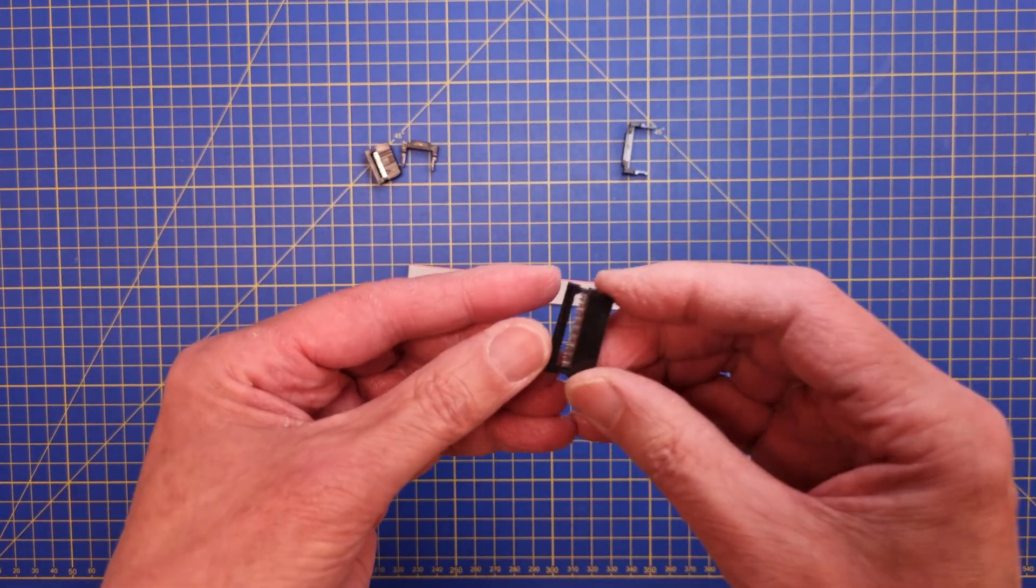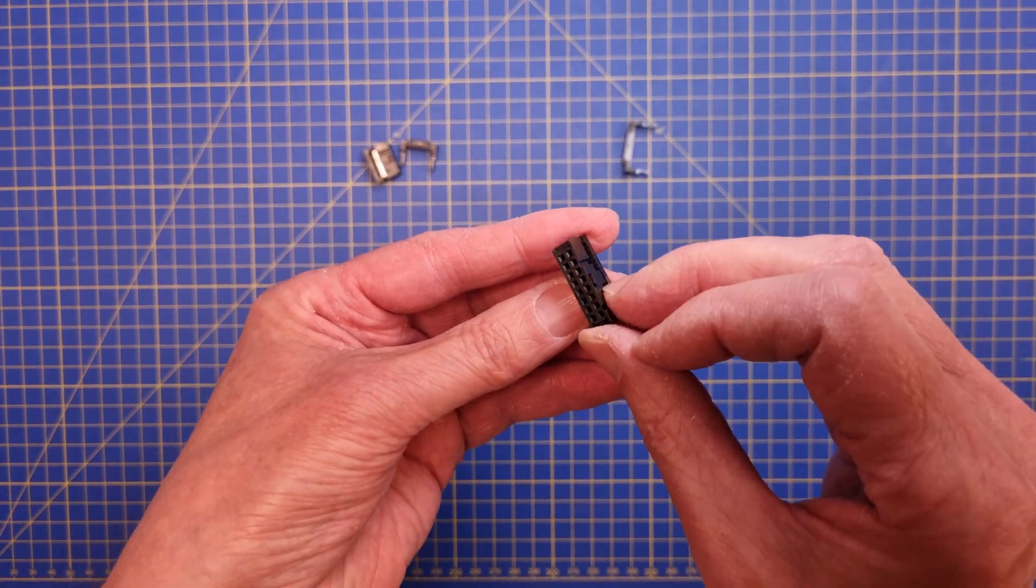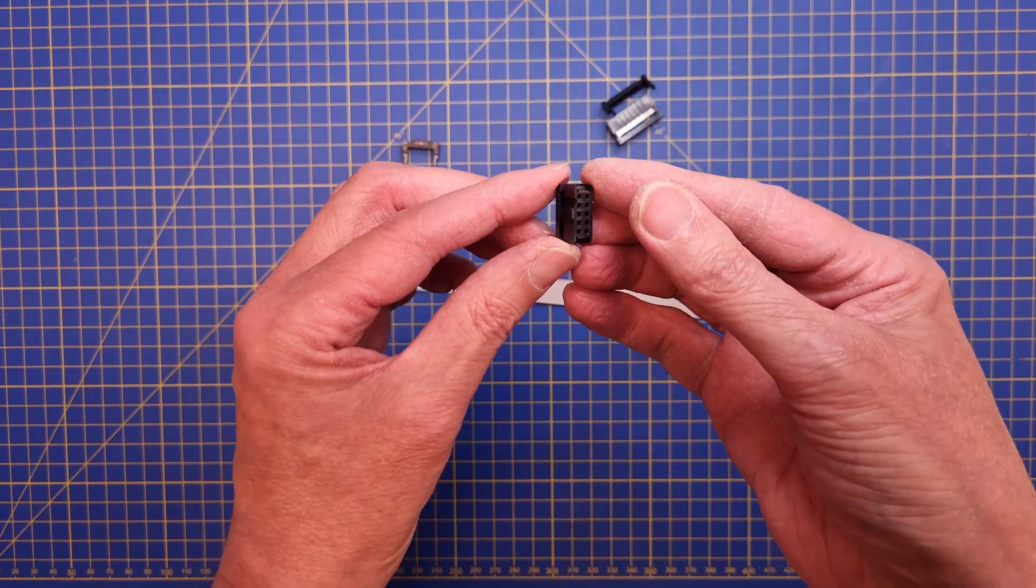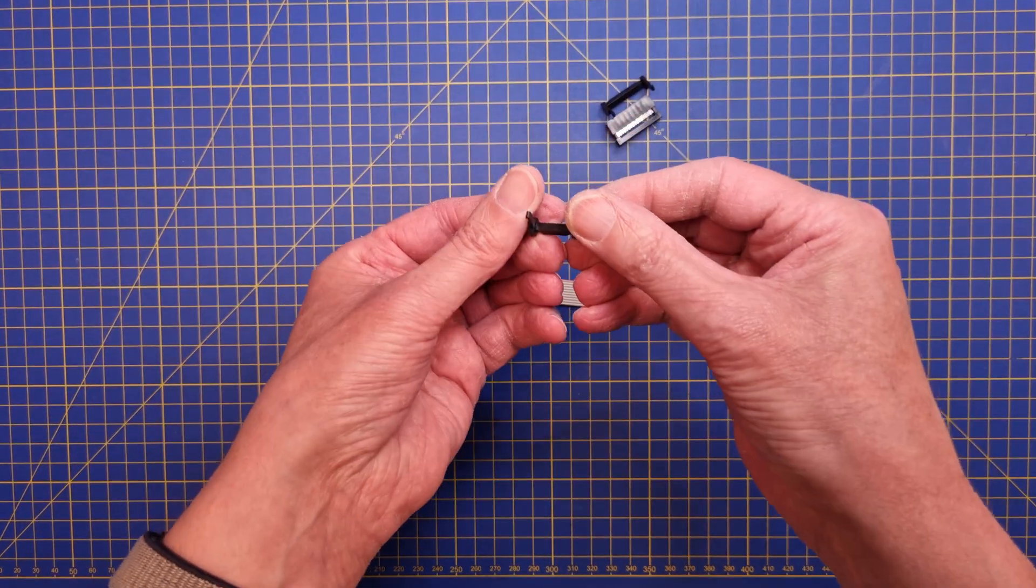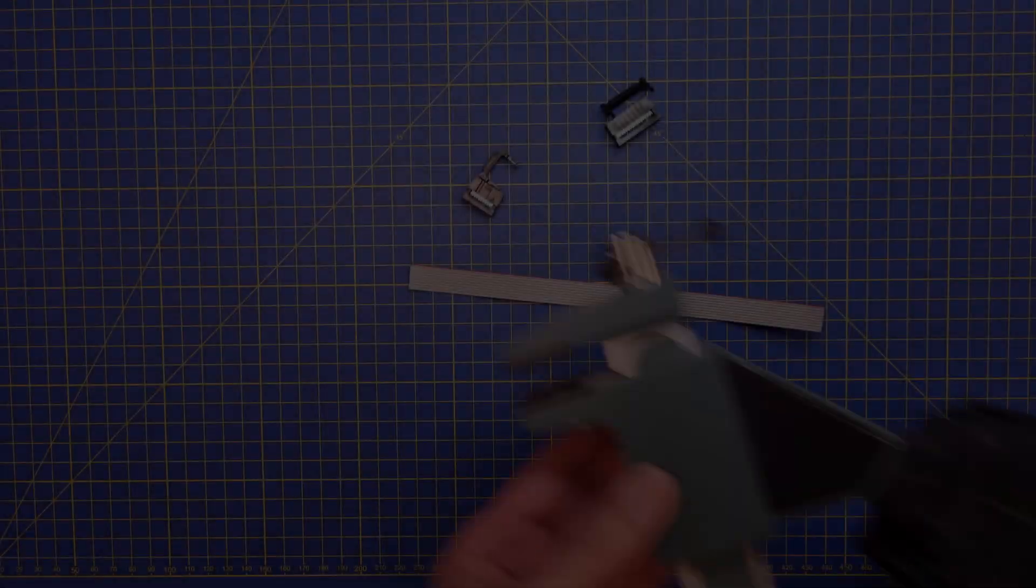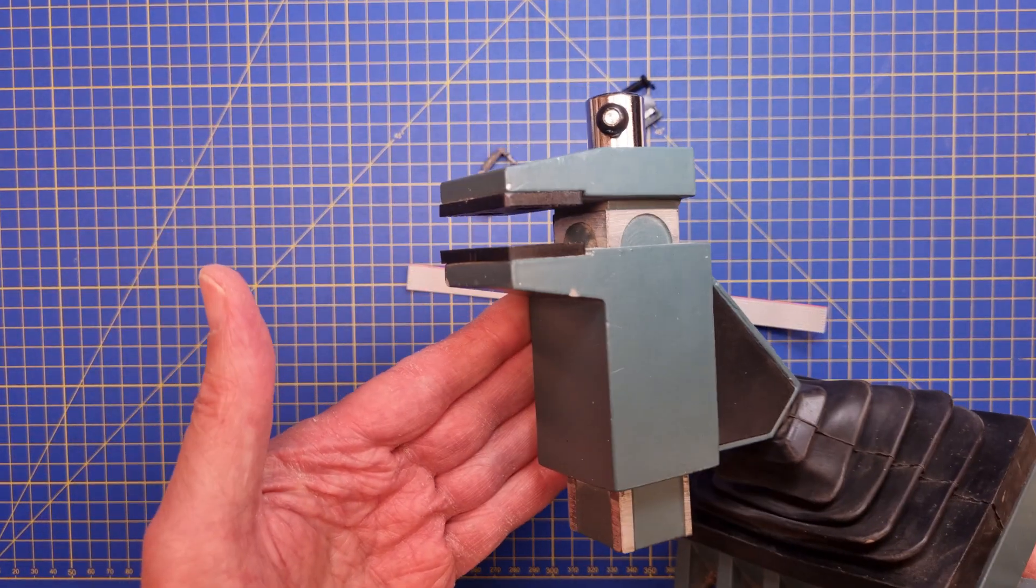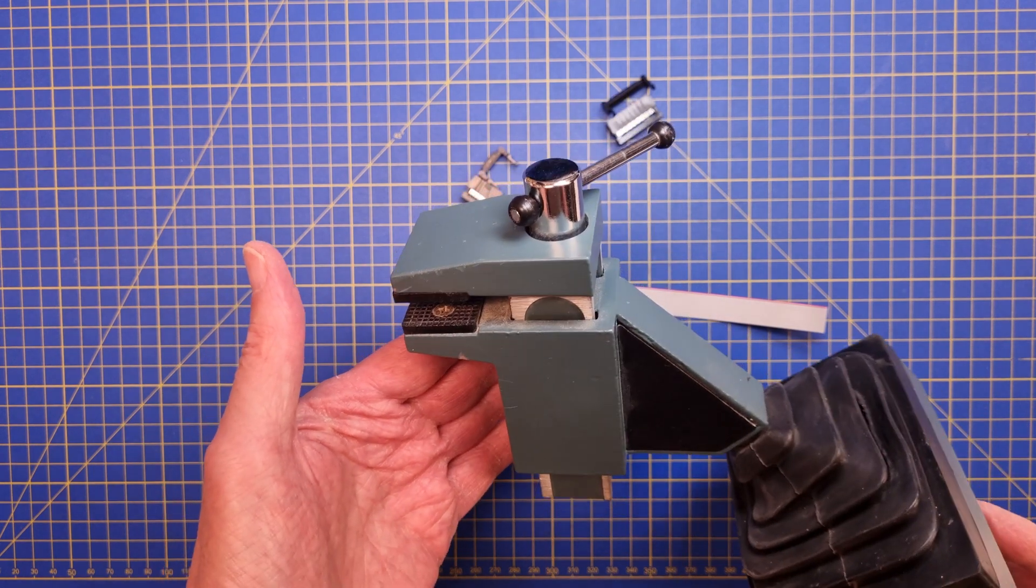You will also need a 16 pin female IDC connector of the crimp type and you will need a 10 pin of the same type as well. Both should have strain relief brackets. Finally you will need a small bench vise. I had mine for almost 25 years so it's a little bit worn out.